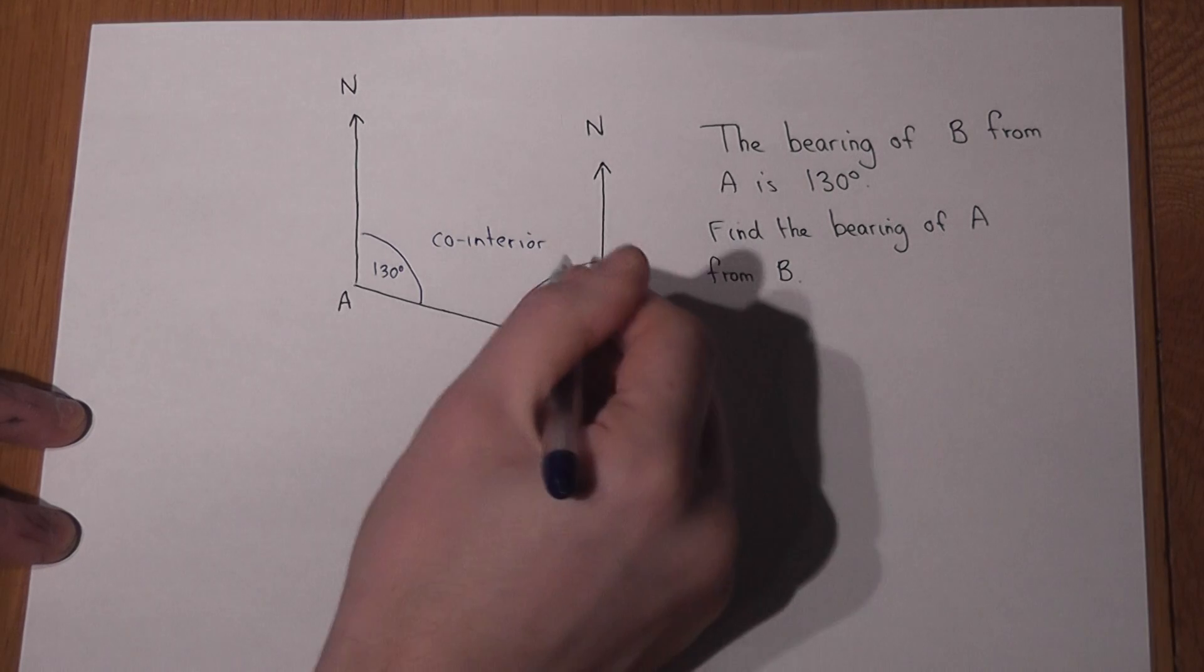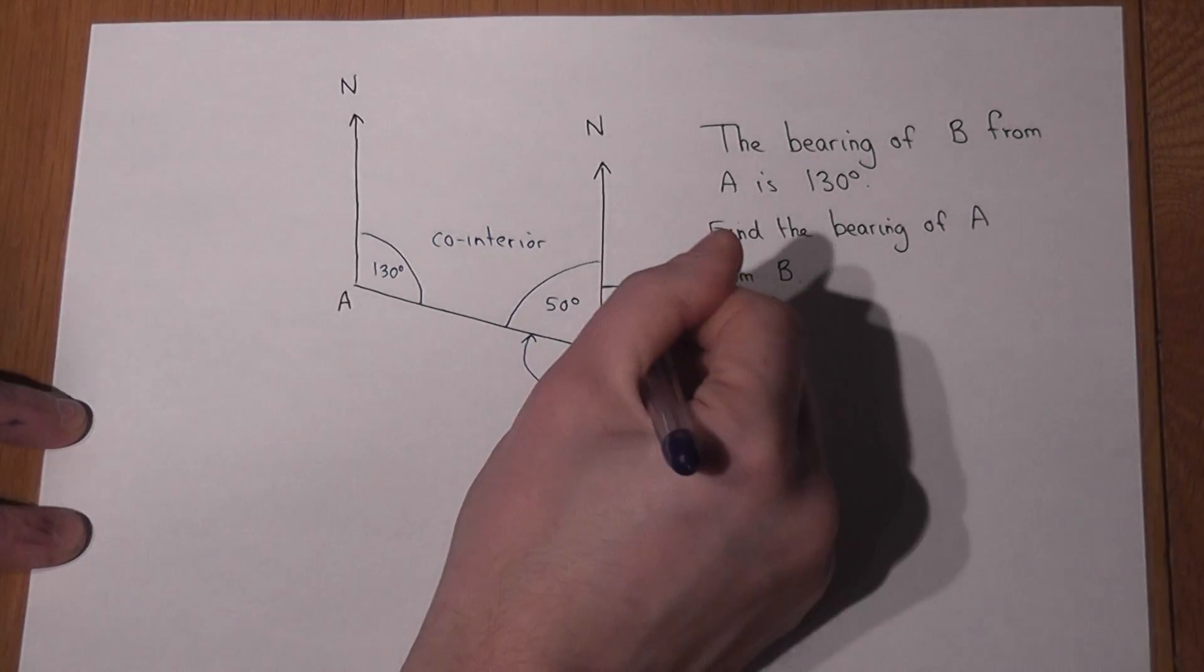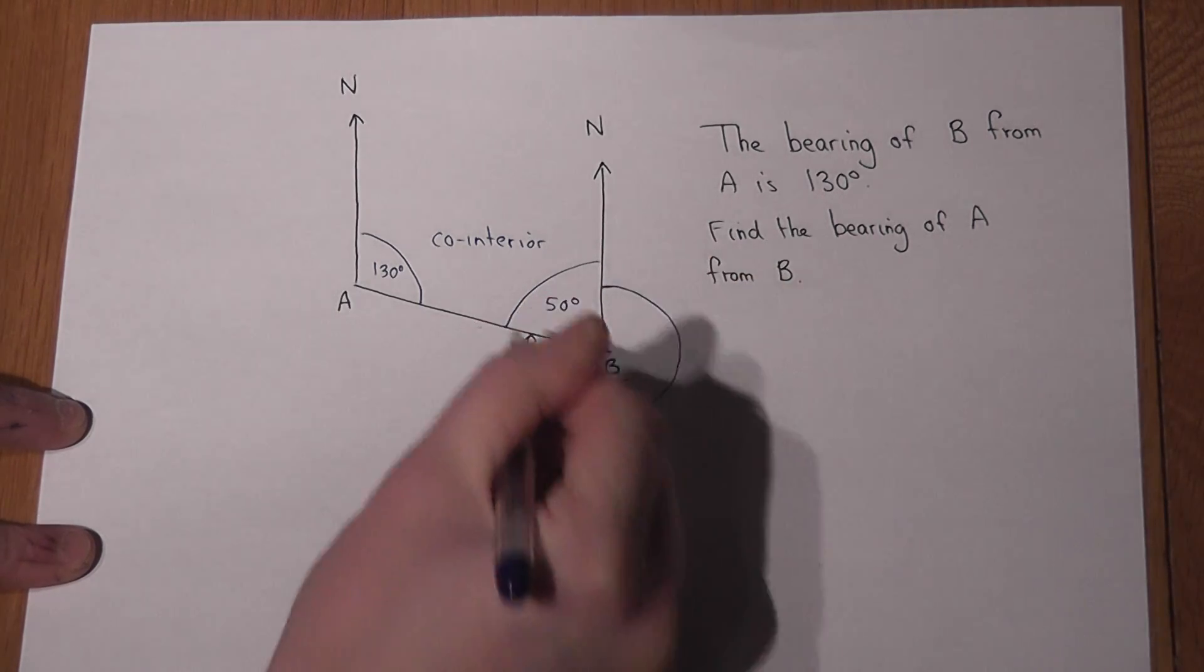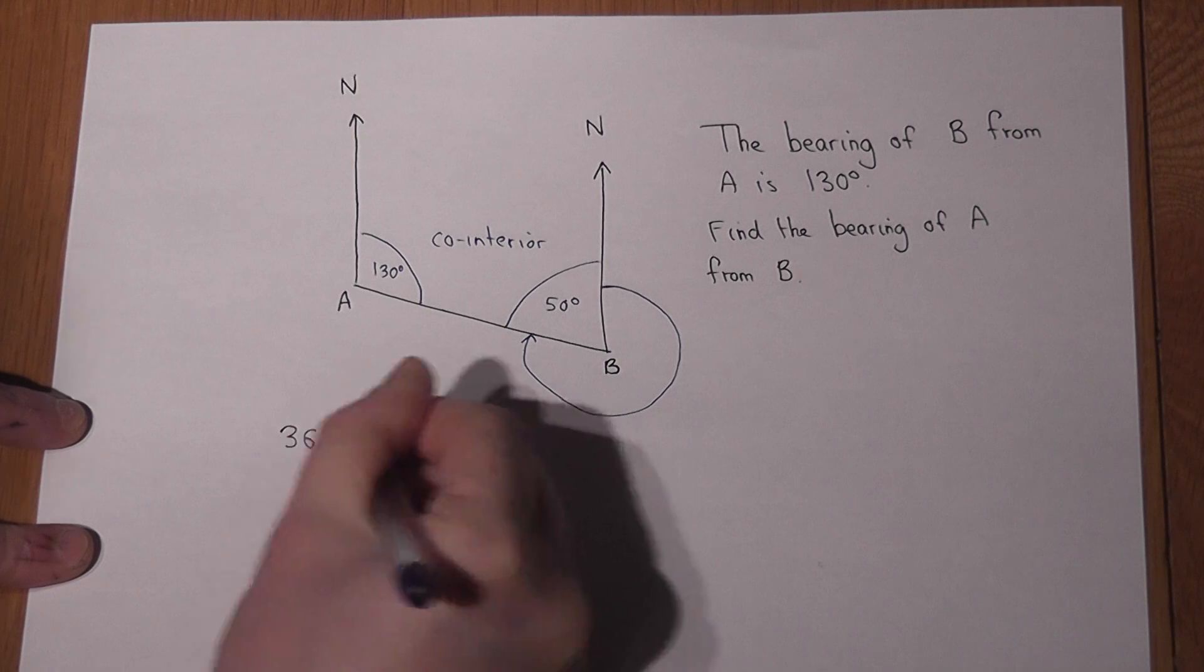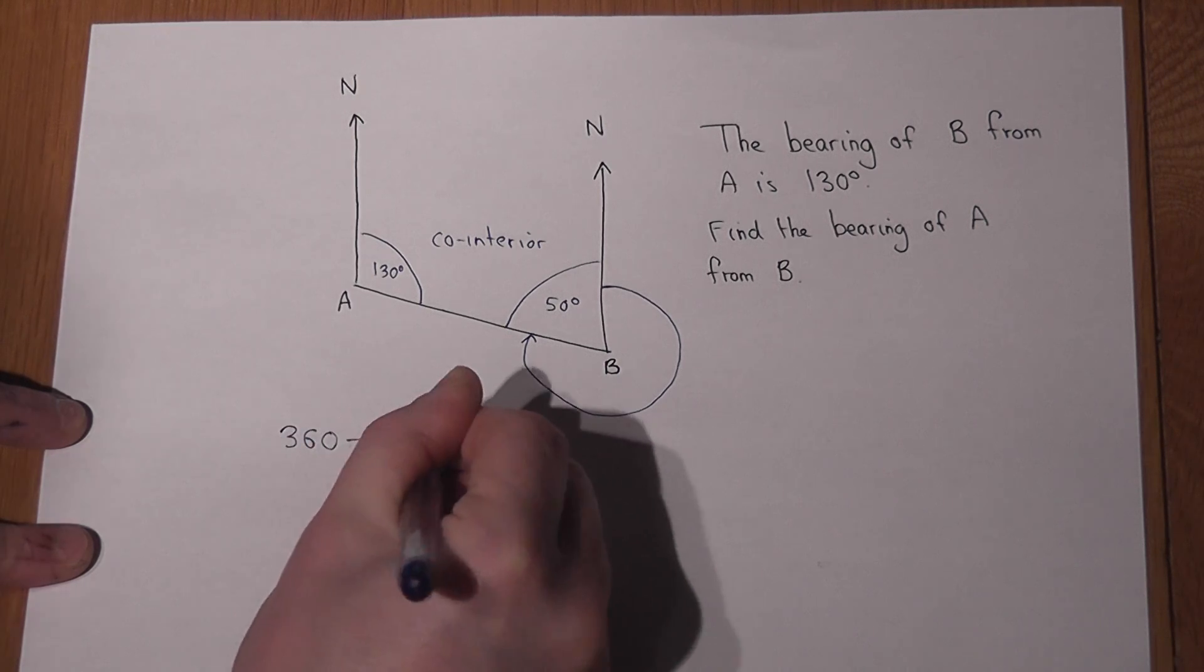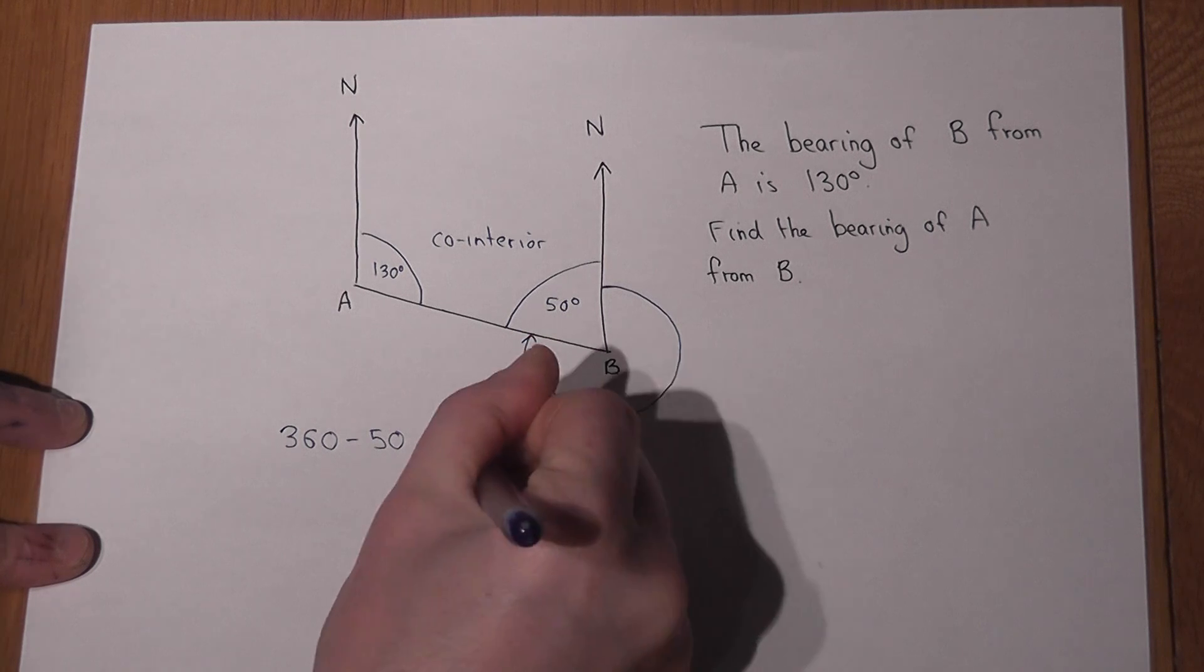So that angle there the acute angle is 50 so the bearing which is the angle around clockwise must simply be the full circle take away 50 which is 310 degrees.